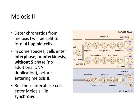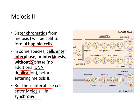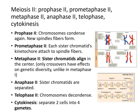Meiosis II then proceeds. Sister chromatids from meiosis I will be split to eventually form four haploid cells. In some species, cells enter another interphase called interkinesis without a synthesis phase — no additional DNA replication occurs. These interphase cells enter meiosis II in synchrony.